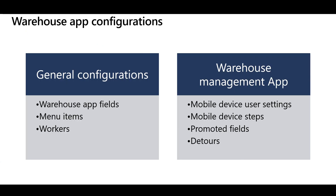Now let's review the required configurations that make the mobile application ready for use. There are configurations required for both the old and new application, like the warehouse app fields, mobile device menu items, and mobile device workers or users. There are other configurations only required for the new Warehouse Management application, like mobile device user settings, mobile device steps, promoted fields and editors.